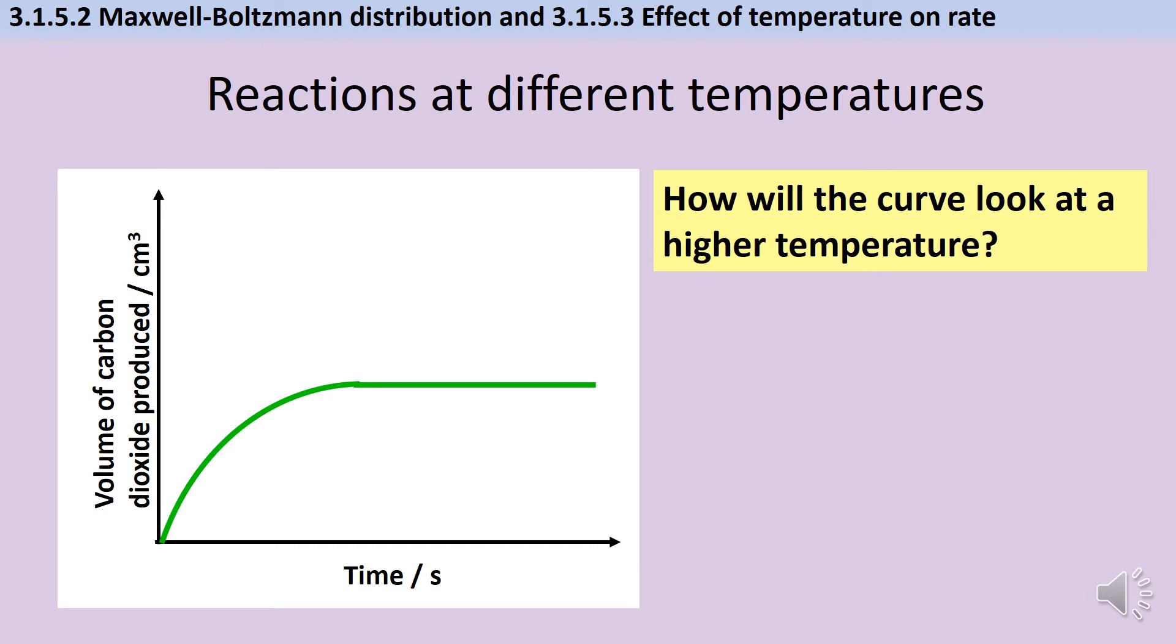So here's an example of a reaction where some calcium carbonate has been added to some acid and so carbon dioxide gas is given off and this can be collected and measured. So how would this curve look different if we did the same reaction changing nothing except for the temperature which is higher?